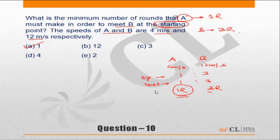Suppose the ratio of the speeds was not 4 is to 12 but let's say 4 is to 10. The ratio is 2 is to 5. In this case, A will need to do a minimum of two rounds to meet B at the starting point, and similarly B will need to do five rounds to meet A at the starting point.